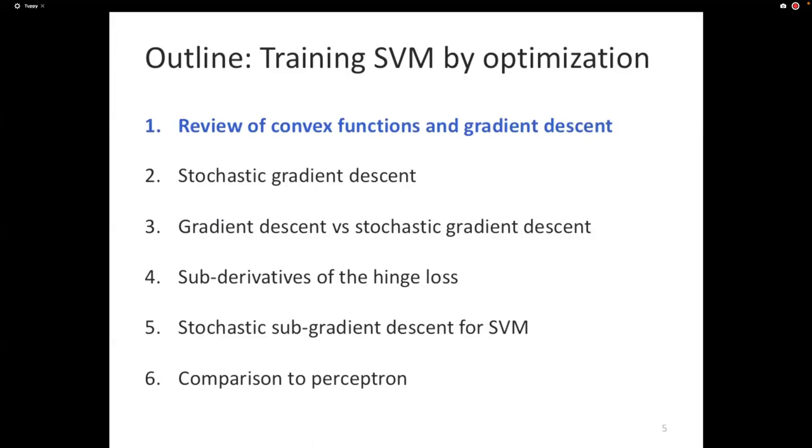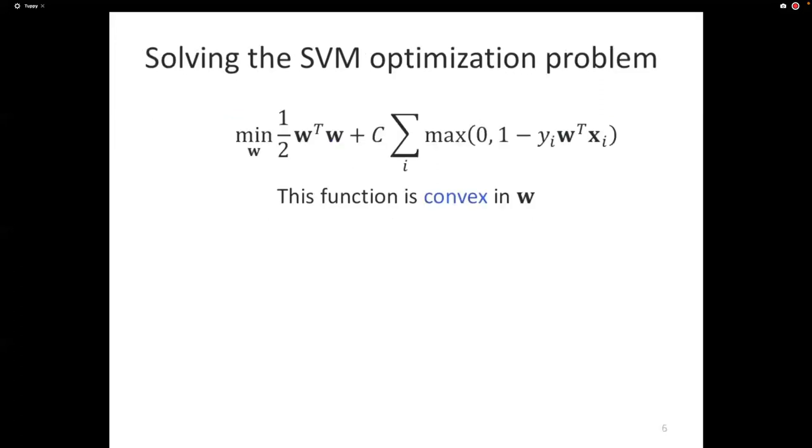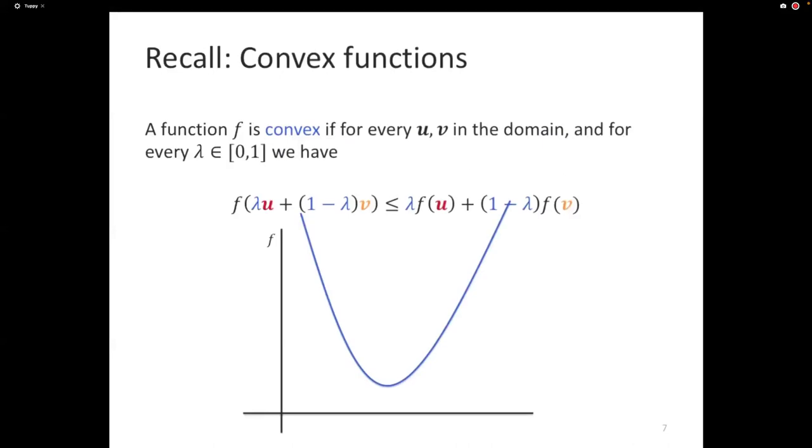We're going to start off with convex functions. How many people have seen convex functions before? Everyone. I'm not going to ask who has not seen it before. Instead, let's quickly review them because it's worth just knowing this. A convex function is one where for every u and v in the domain of the function, and for any lambda that's between 0 and 1, we have this property here: f of lambda u plus 1 minus lambda v is less than or equal to lambda f of u plus 1 minus lambda f of v. This is an annoying thing to look at, but let's interpret this.